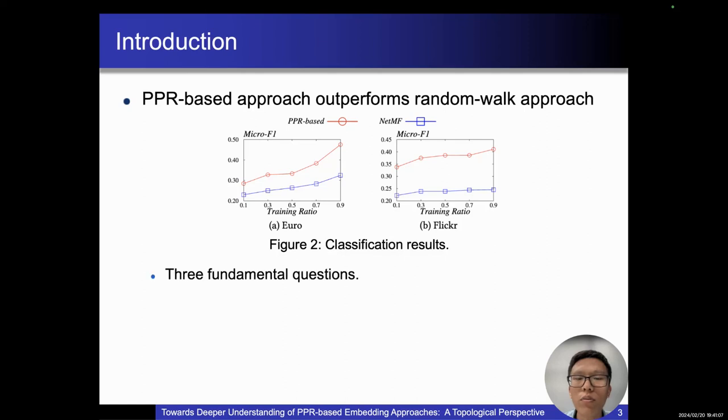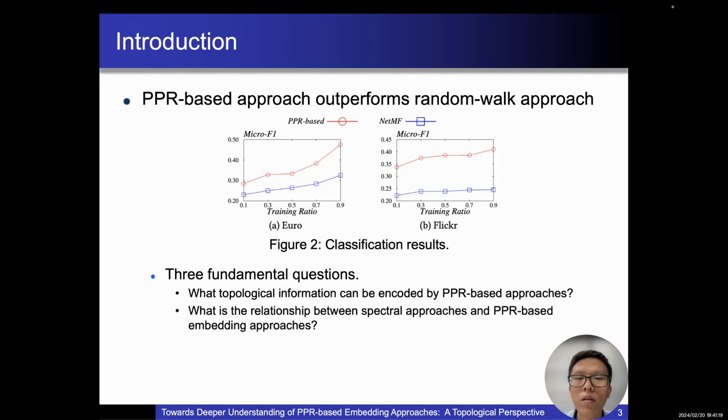To fill this research gap, we focus on three fundamental research questions. First, what topological information can be encoded by PPR-based approaches? Second, what is the relationship between spectral approaches and PPR-based embedding approaches? Third, why do PPR-based embedding approaches consistently outperform random walk-based alternatives?